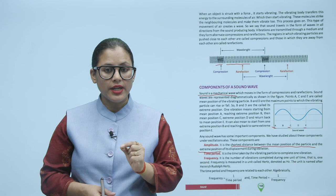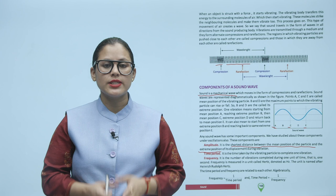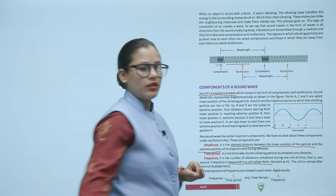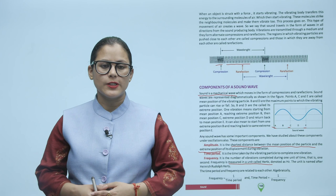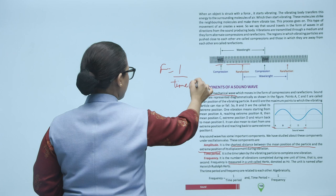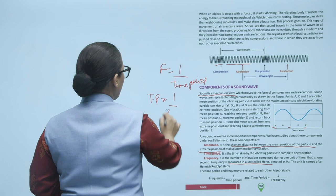Time period: it is the time taken by the vibrating particle to complete one vibration. Frequency: it is the number of vibrations completed during one unit of time, that is one second. Frequency is measured in a unit called Hertz, denoted as Hz. The unit is named after Heinrich Rudolph Hertz. Time period and frequency are related algebraically: frequency equals one divided by time period, and time period equals one divided by frequency.